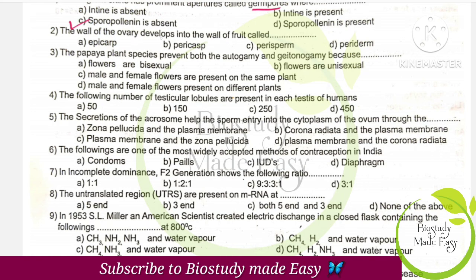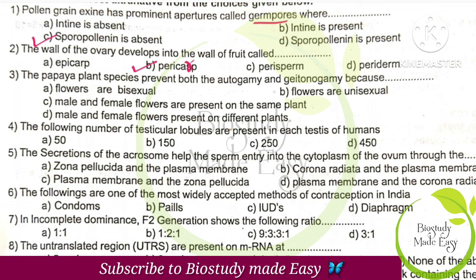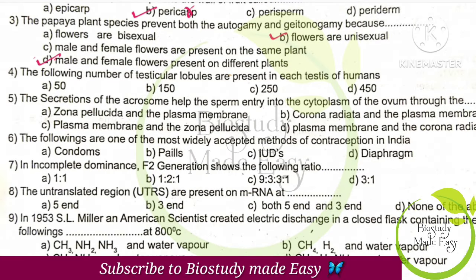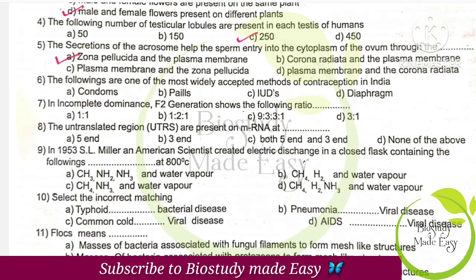First question: the wall of ovary develops into the wall of fruit, which is called pericarp. Papaya plant species prevent both autogamy and geitonogamy. Plants are unisexual and male and female flowers are present on different plants. The number of testicular lobules present in each testis is 250. Secretions of acrosome help sperm entry through zona pellucida and plasma membrane — option A.